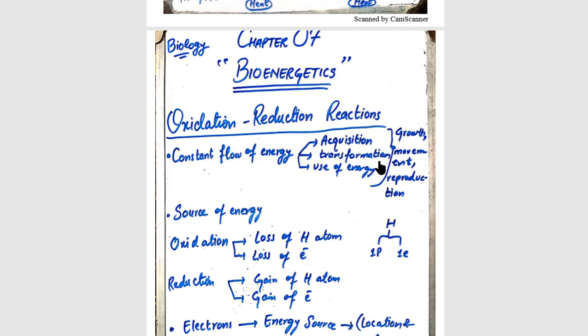Secondly, oxidation-reduction reactions are called redox reactions. These are a direct source of energy. In redox reactions, electrons are exchanged — electrons are lost and gained. When a compound loses electrons, we say it is oxidized, and the process is called oxidation. When a compound gains electrons, we say it is reduced, and the process is called reduction.